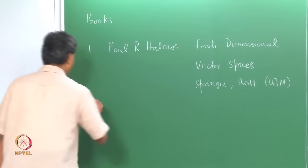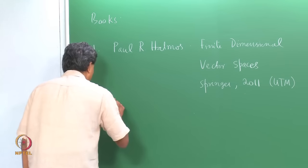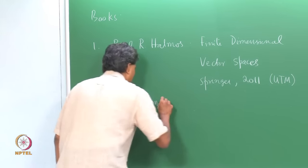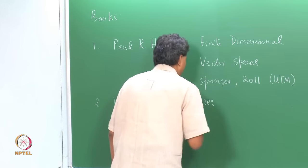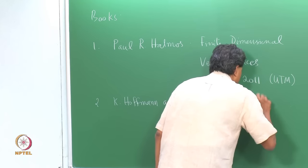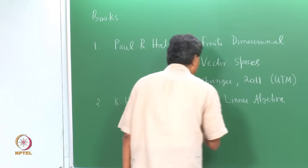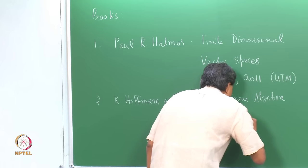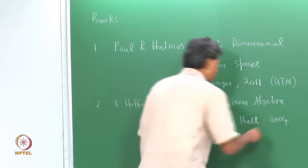There is another classic book followed in many universities, by two authors Hoffman and Kunze, titled Linear Algebra. I am referring to the Prentice Hall edition, which appeared in 2004.